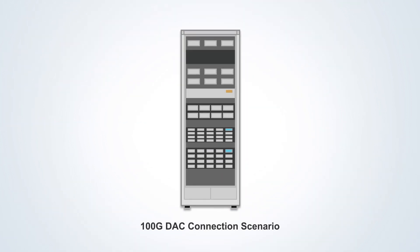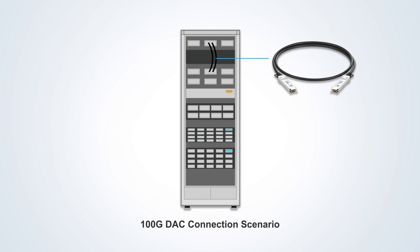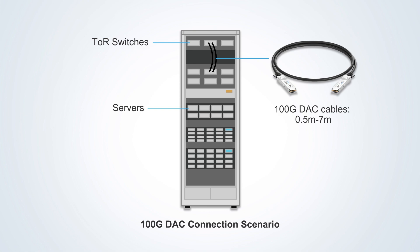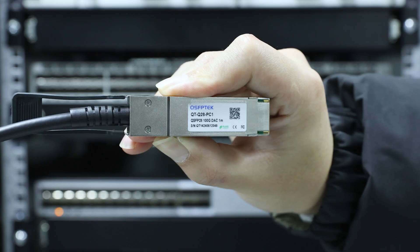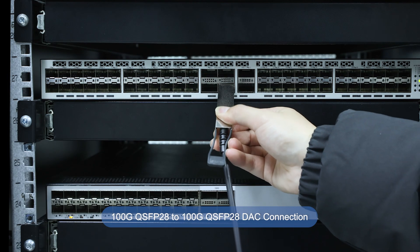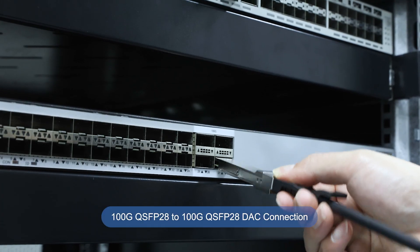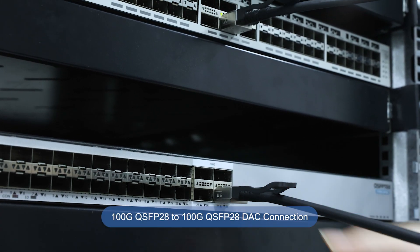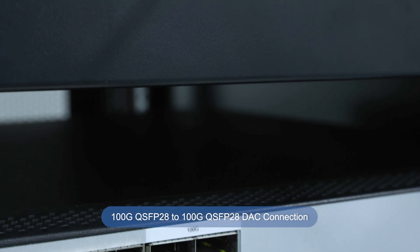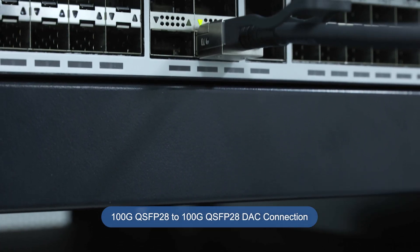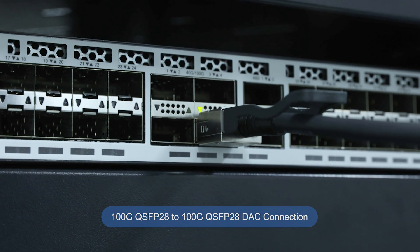100G QSFP28 DAC is usually used for short-distance interconnection scenarios within 7 meters in data centers, which is very suitable for top-of-rack interconnection between 100G switches and servers. If you connect two 100G network devices, such as switches and servers, it is recommended to use 100G QSFP28 to 100G QSFP28 DAC to connect, which is very convenient and fast.